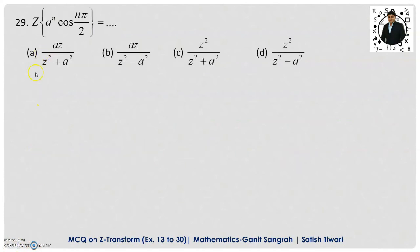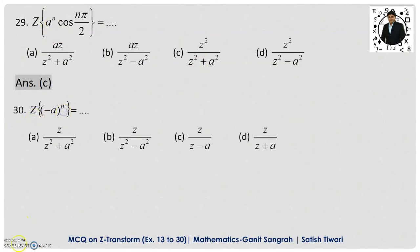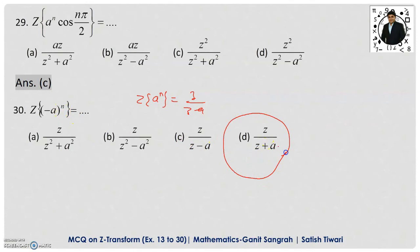Example 29: Z-transform of aⁿ·cos(nπ/2). Use Z-transform of cos(nπ/2) = z²/(z²+1) and apply damping rule replacing z with z/a. The result is z²/(z²+a²), option C. Example 30: Z-transform of (−a)ⁿ. Since Z-transform of aⁿ = z/(z−a), replace a with −a: Z-transform of (−a)ⁿ = z/(z+a). Option D is correct.